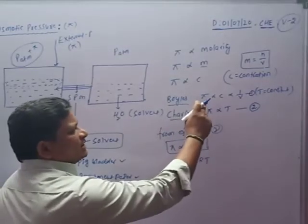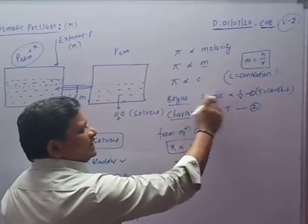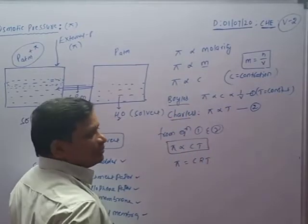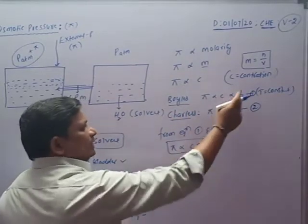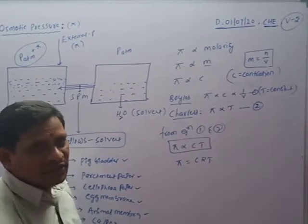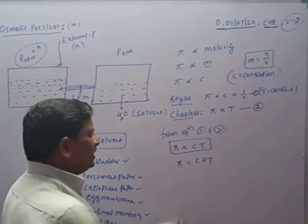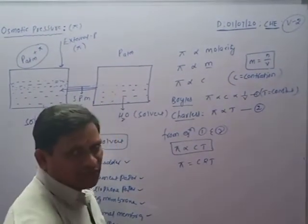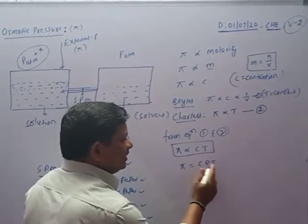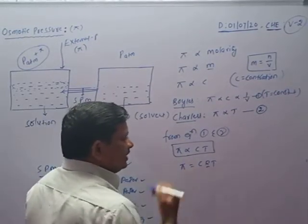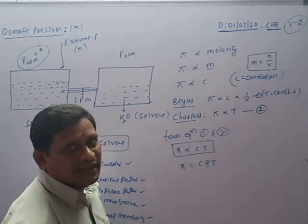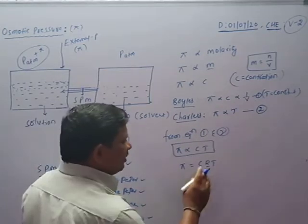According to Boyle's law, pi is directly proportional to C, and according to Charles's law, pi is directly proportional to T. Combining equations 1 and 2, pi is directly proportional to C into T. Removing the proportionality sign and adding the proportionality constant, pi equals CRT, wherein R is the ideal gas constant. This equation is the Van't Hoff equation.